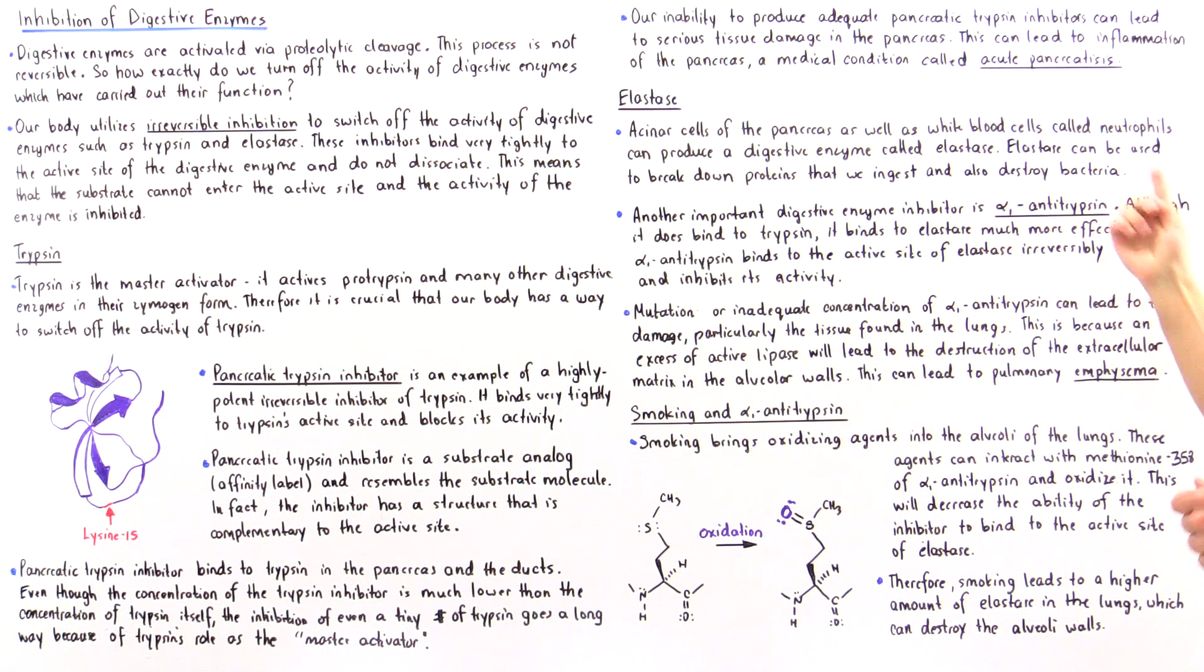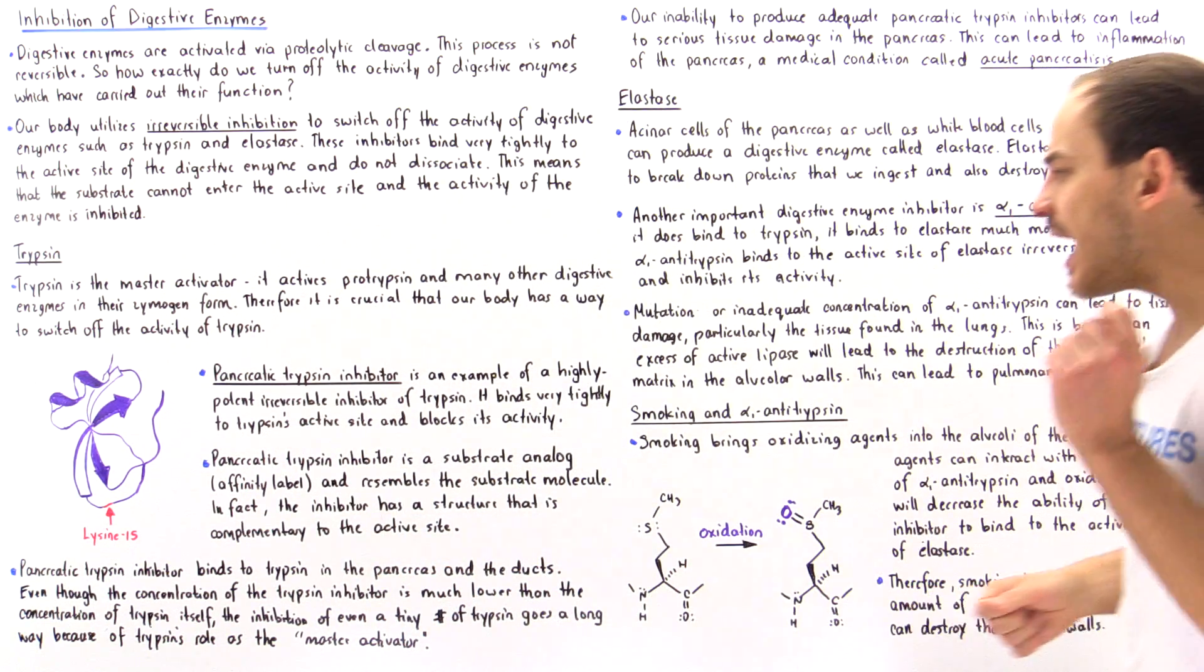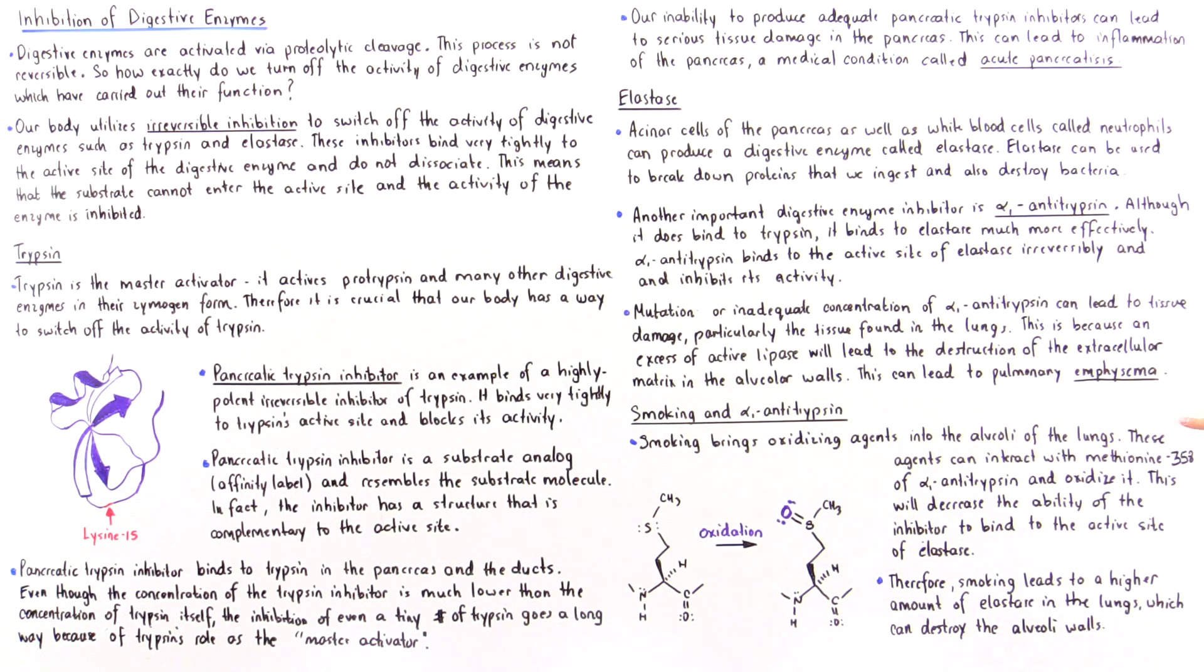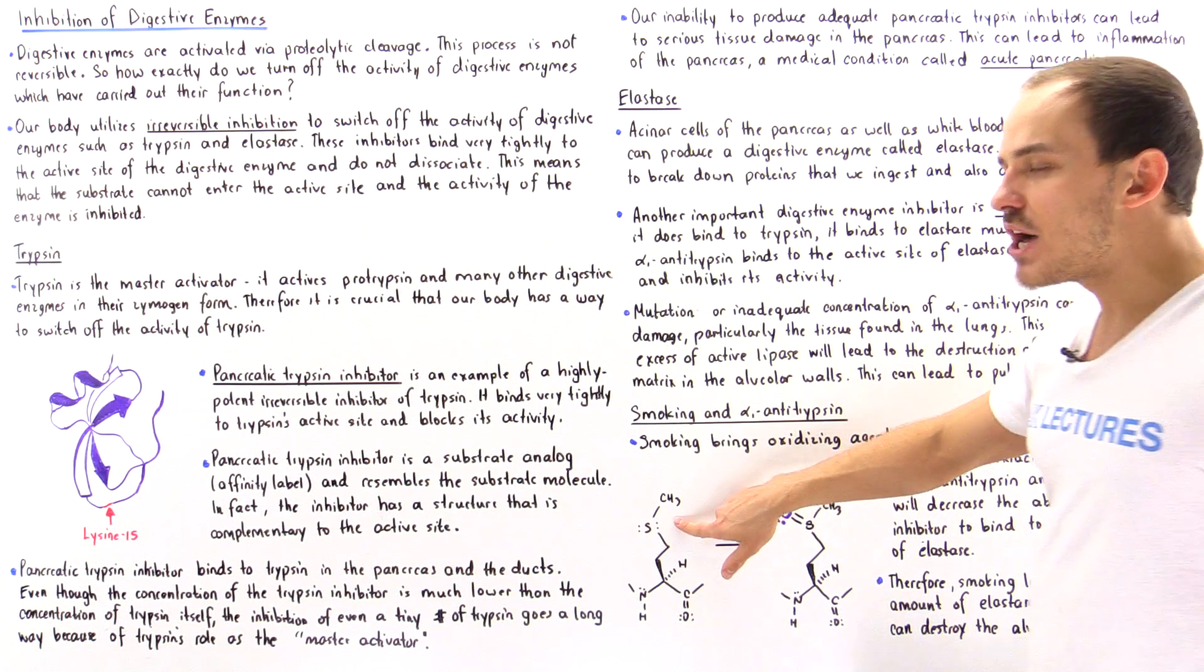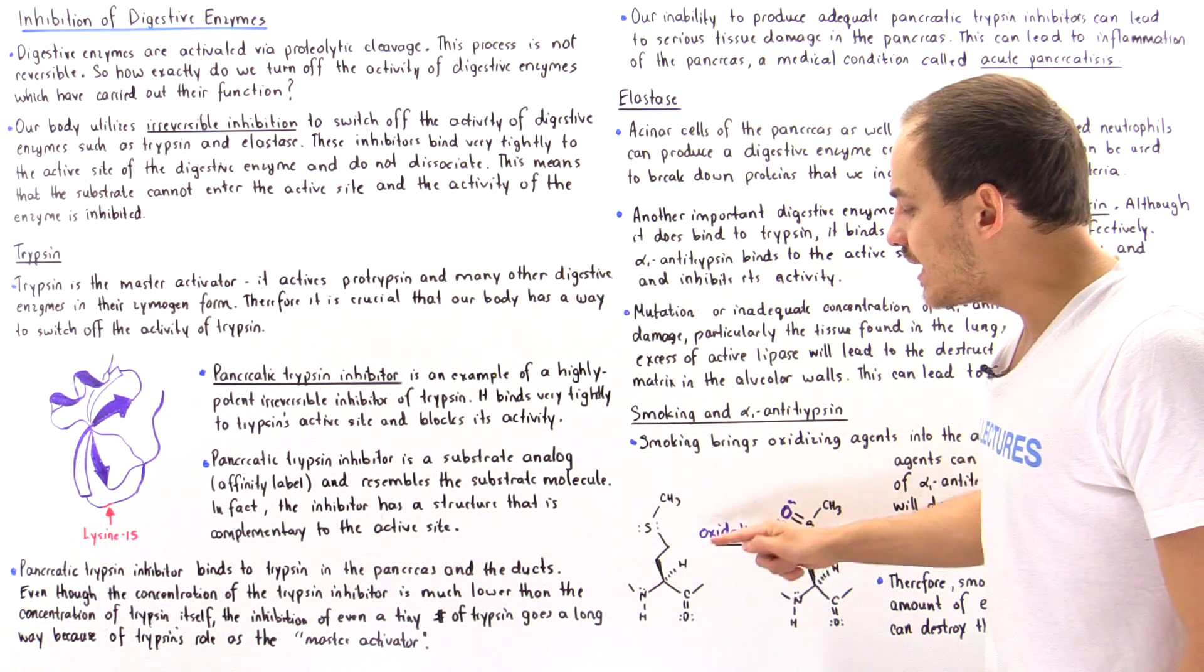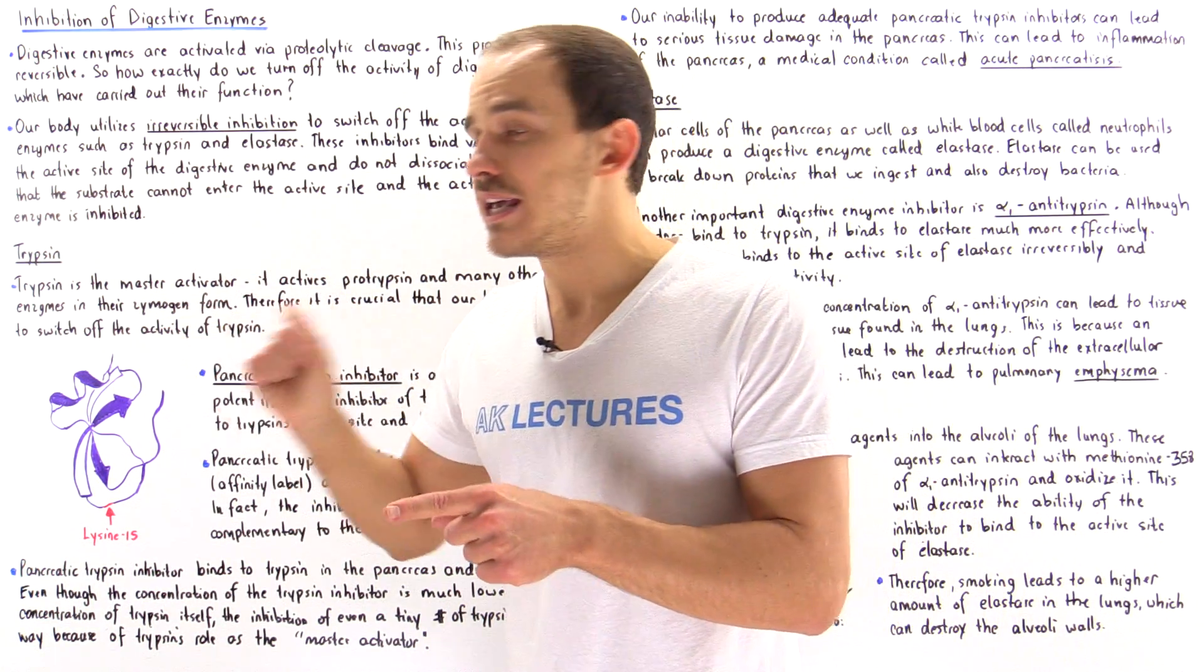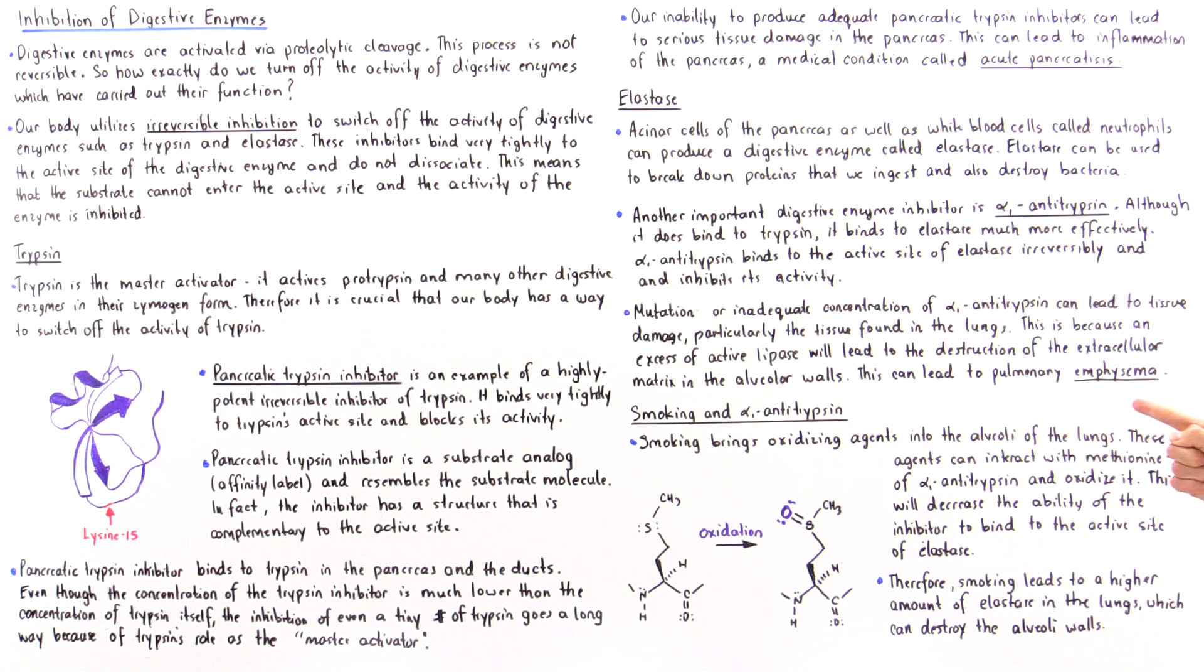Now if we examine the structure of alpha-1 antitrypsin we're going to find a very important residue, namely methionine 358. And it's the methionine 358, this side chain of methionine 358, that is responsible for actually interacting with the active side of elastase.